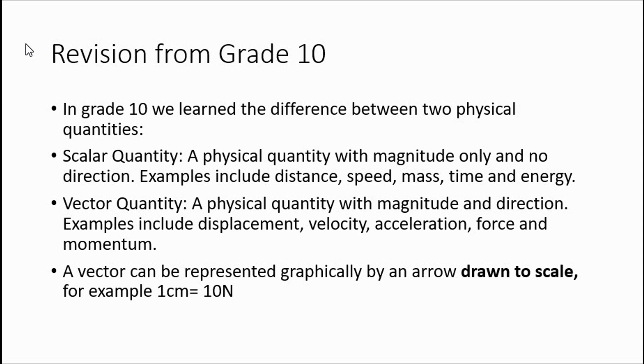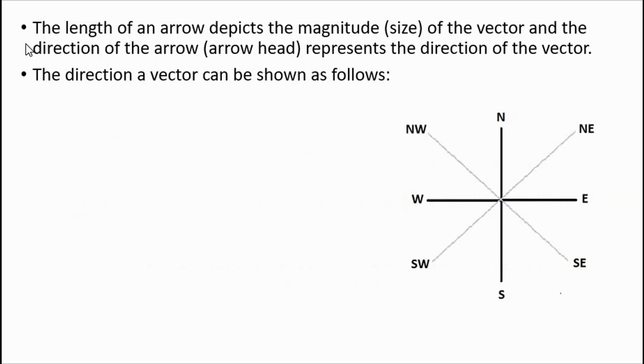When we drew and learned how to draw vectors in grade 10, we drew them to scale. We also learned the scale that we use: one centimeter equals to 10 newtons. Remember, the length of an arrow depicts the magnitude or size of the vector and the direction of the arrow represents the direction of the vector.